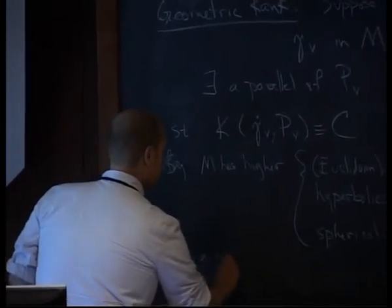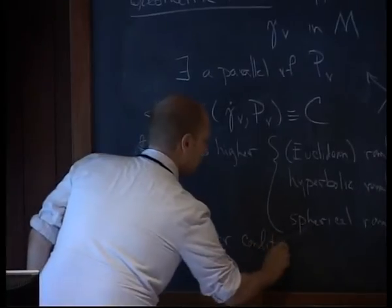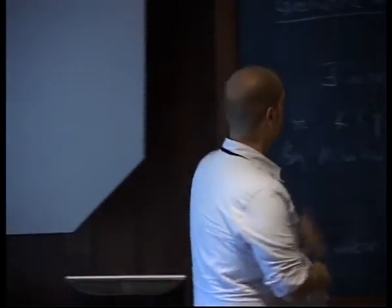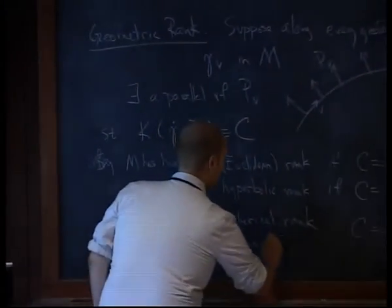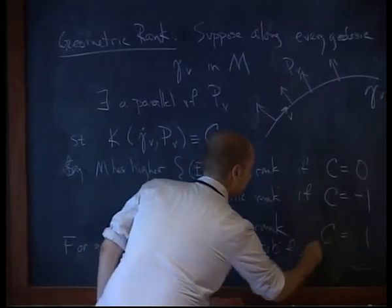The first of these — Euclidean rank — is the most common, usually defined in terms of the dimension of parallel Jacobi fields along your geodesics. The definition here is equivalent, although you have to be a little careful when counting dimensions: you have to add one to account for the actual geodesic direction, which is itself a parallel Jacobi field. For a slightly weaker condition, instead of parallel vector fields we could look for Jacobi fields along the geodesic that maintain this constant curvature.